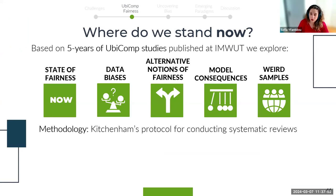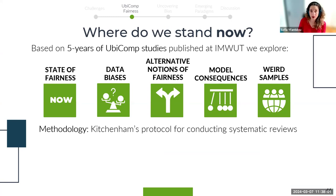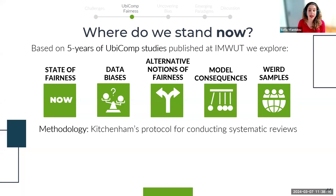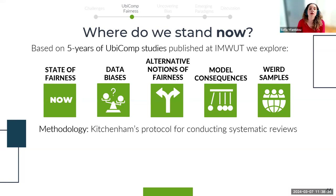To understand machine learning fairness awareness within the ubicomp community, based on the past five years of publications in ACM IMWUT journal — perhaps the most prominent venue for ubicomp research — we explored the state of fairness in the community, the types of biases that can emerge in ubicomp data, how the community seeks fairness in non-traditional ways, the consequences of unfair ubicomp models, and whether ubicomp works with WEIRD users — Western, Educated, Industrialized, and so on.